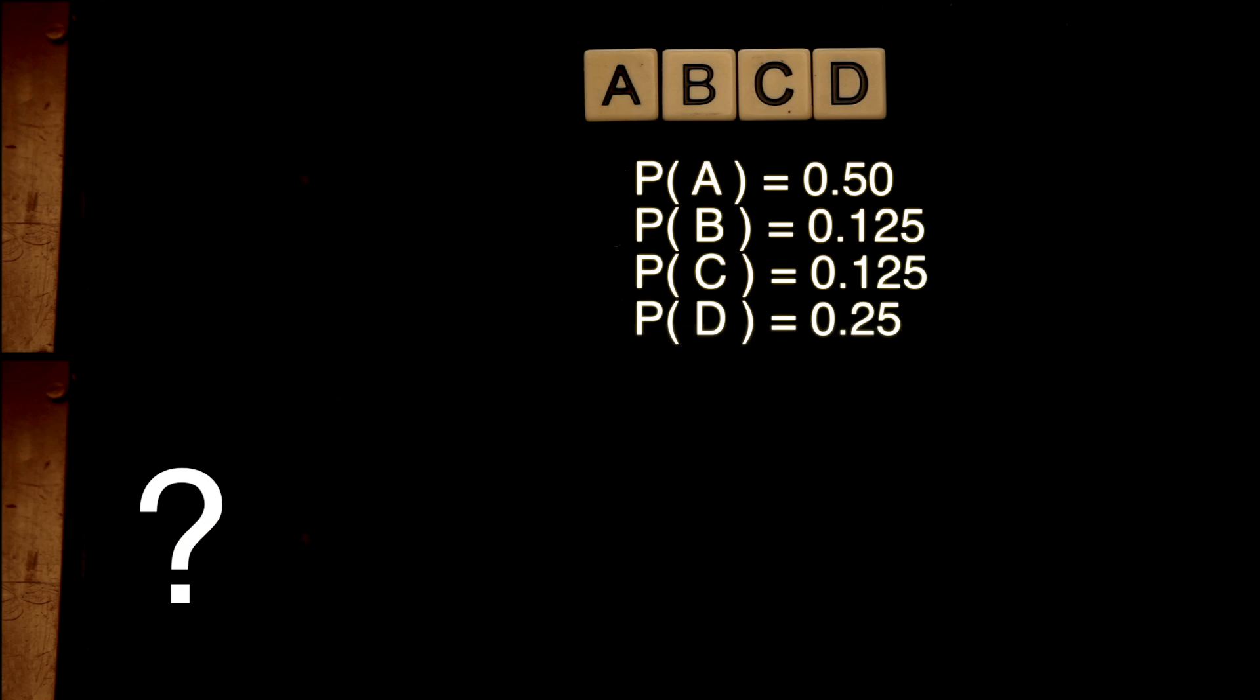Now, what about Machine 2? As with Machine 1, we could ask two questions to determine the next symbol. However, this time, the probability of each symbol is different, so we can ask our questions differently.